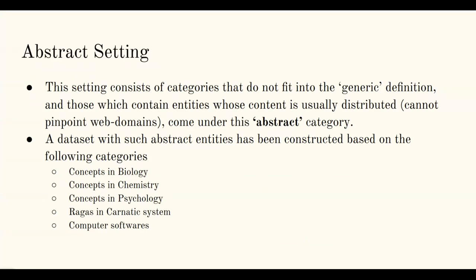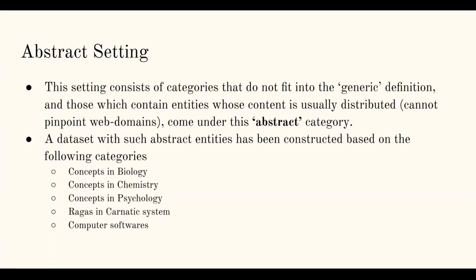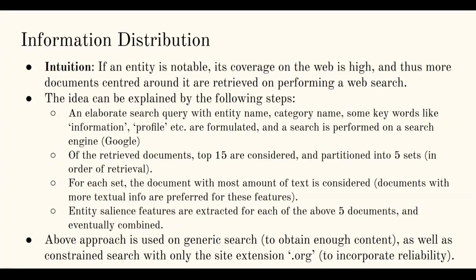Next we have the abstract setting. This consists of categories that do not fit the generic definition and for which content is spread across the web — we cannot pinpoint specific reliable web domains as we did for film actors or cricketers. We construct this dataset with categories such as concepts in biology, chemistry, psychology, Carnatic ragas, and computer software. Since we cannot identify reliable web domains, we look for alternative ways to gather information about an entity on the web.